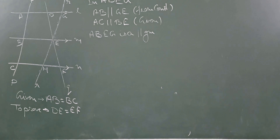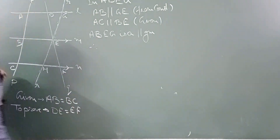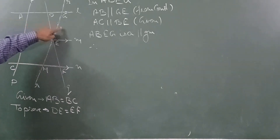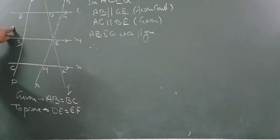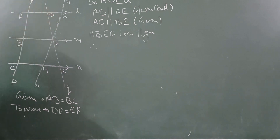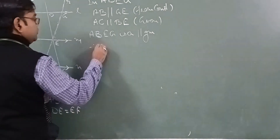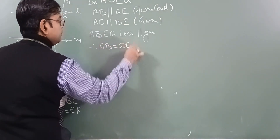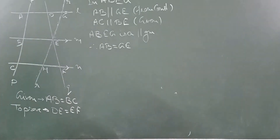Since ABEG is a parallelogram and opposite sides are equal, we can say AB equals GE. This is result number one. Similarly, we have to prove that for quadrilateral BCHE: BC is parallel to EH from construction, and CH is parallel to BE as given. Therefore BCHE is a parallelogram.